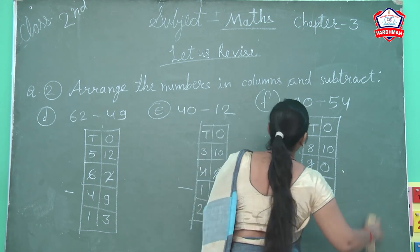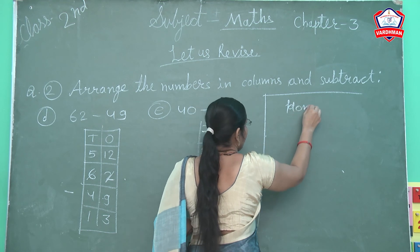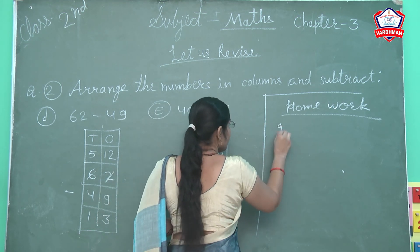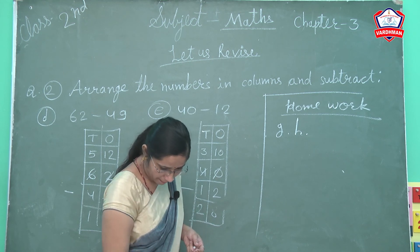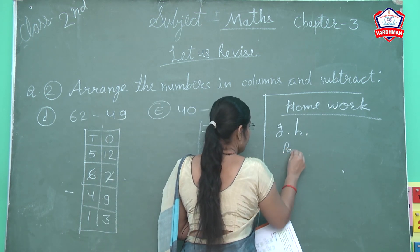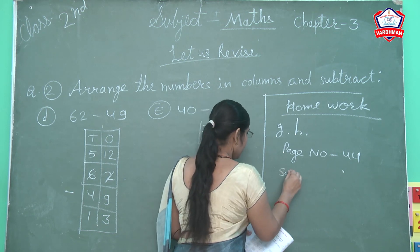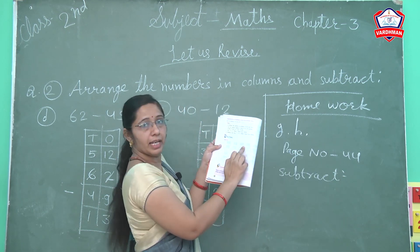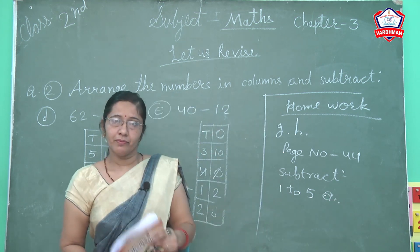Next, aapke homework hain — woh aap note down karlo. F mein nahi karwaya, so g aur h karna hai. G and h, aur page number 44. Subtraction mein 1, 2, 3, 4, 5 — jo upar wali line hai woh aapko homework mein karni hai — 5 questions. Ok, thank you.